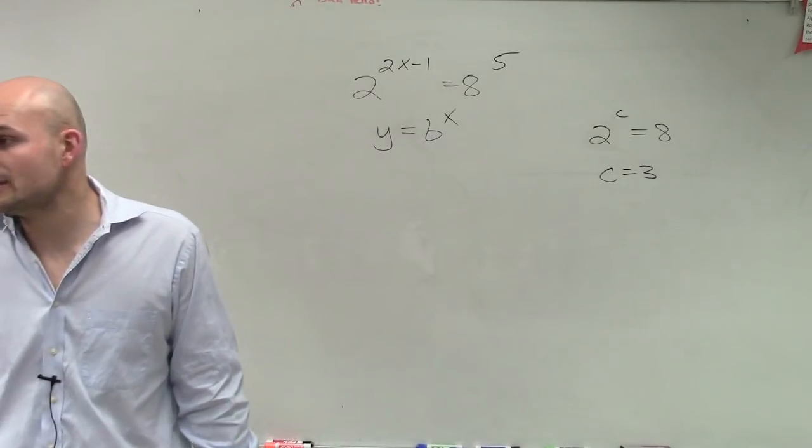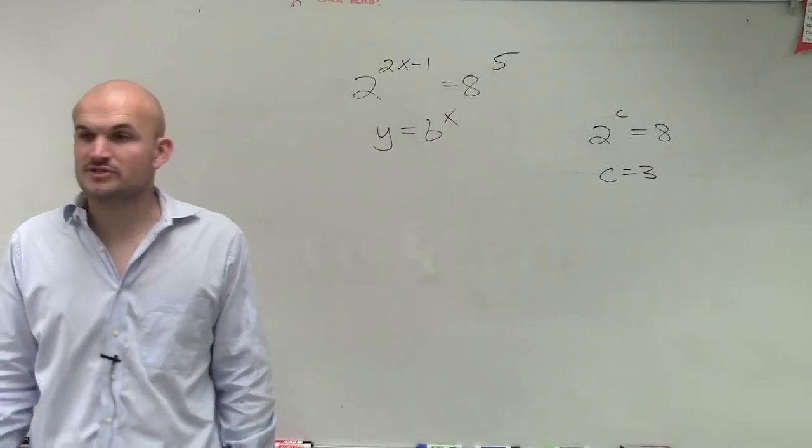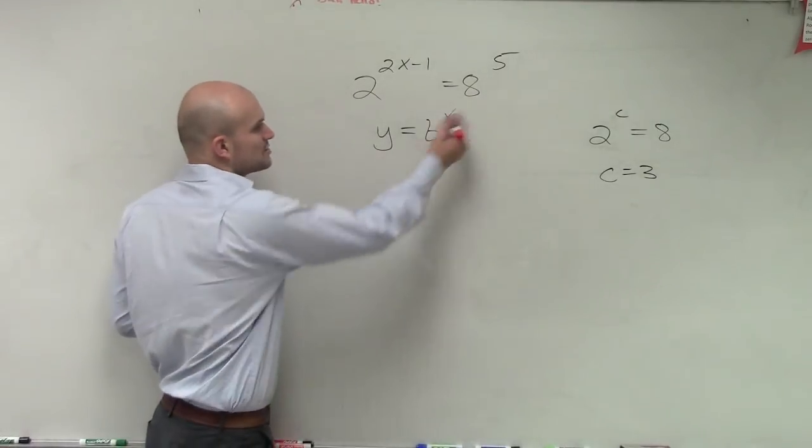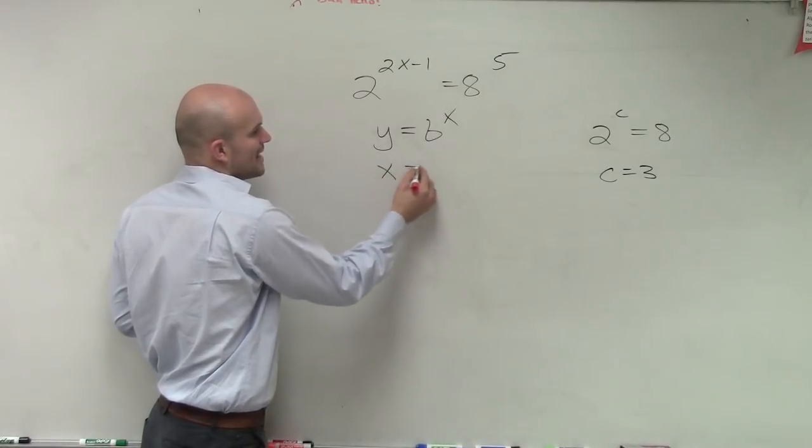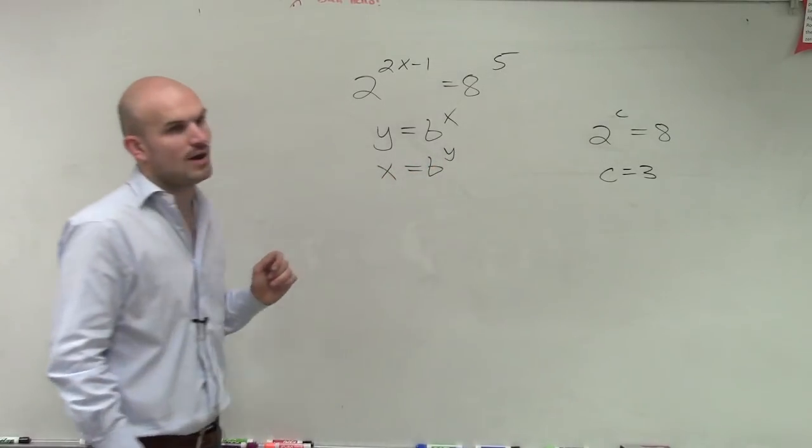Here's the graph for exponential functions. If I wanted to find the inverse, like on your chapter 7 test, the first thing you want to do on your inverse is swap the x and the y's, right? So you swap your x and y's and you're left with x equals b to the y.